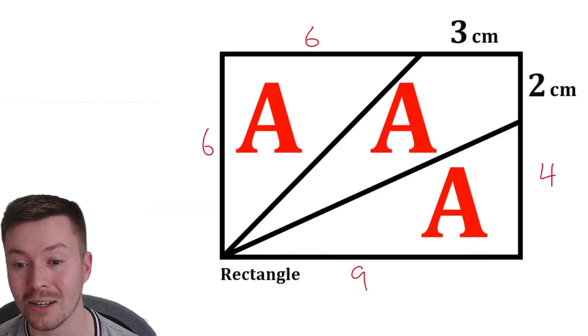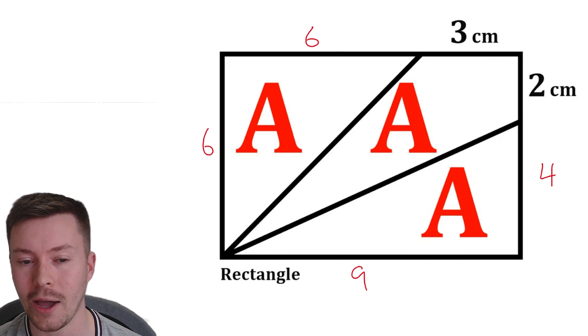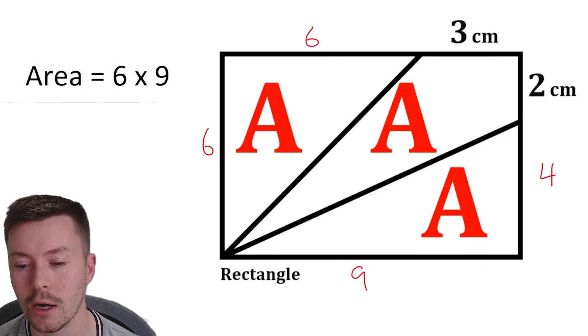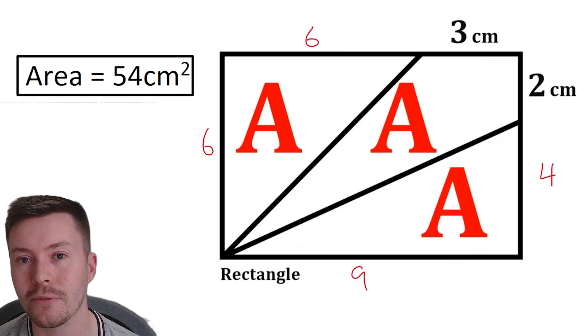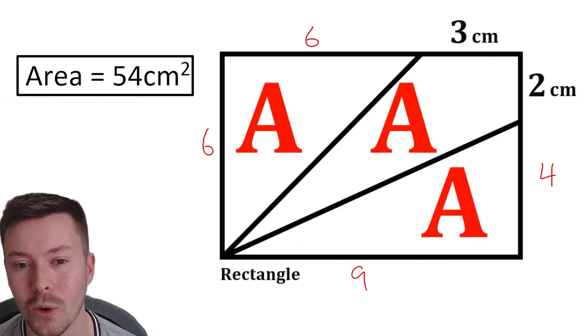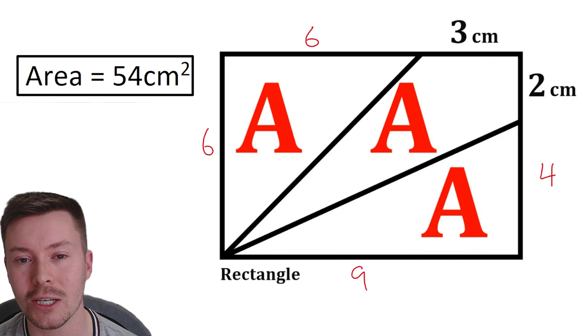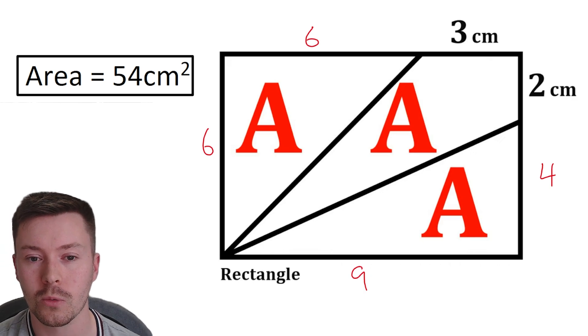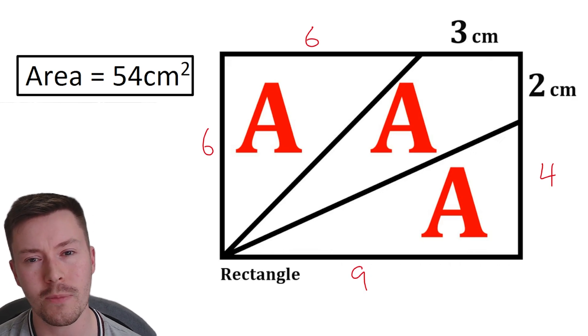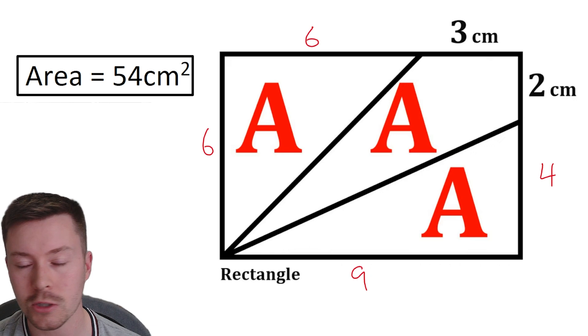Now the area of that rectangle, instead of working out A and everything and combining it to get 3A, we can just do six times nine, which gives us an area of 54 centimeters squared. That's such a nice, neat solution for a problem which really we didn't have an awful lot of information to begin with. So it's quite nice, I think.